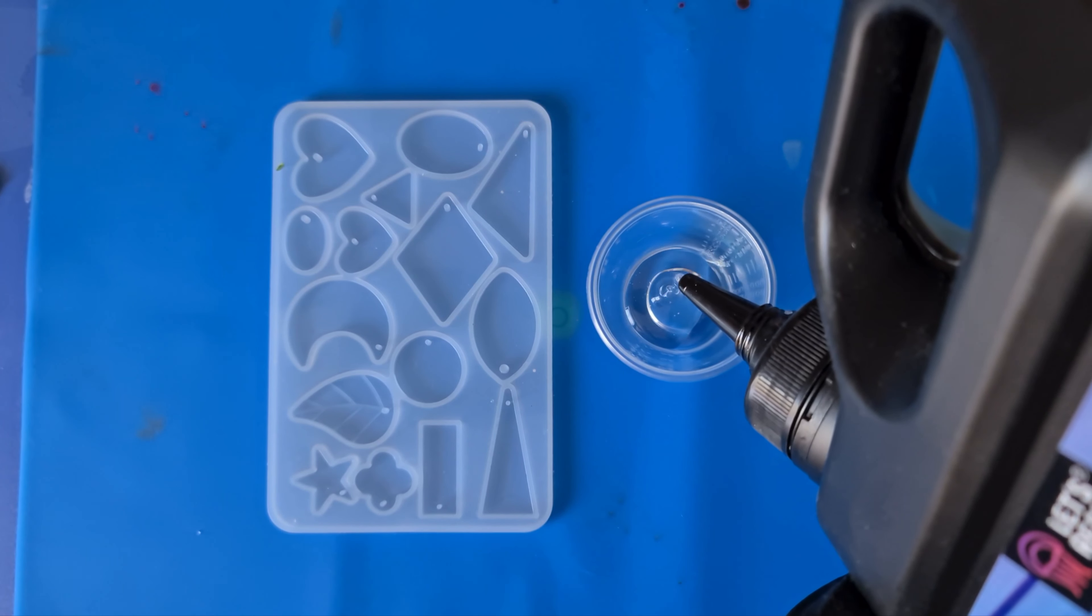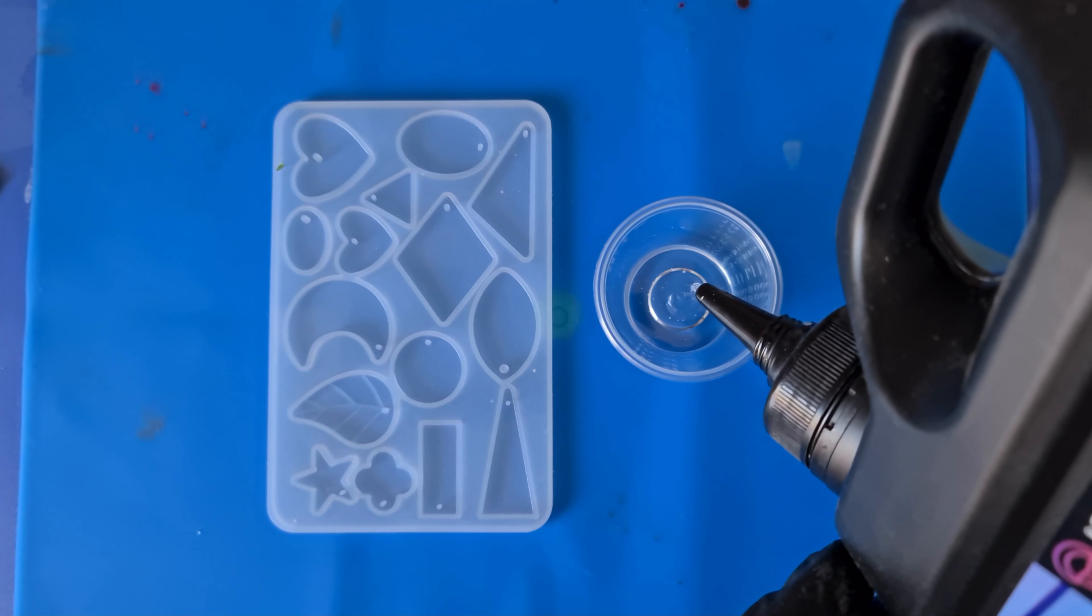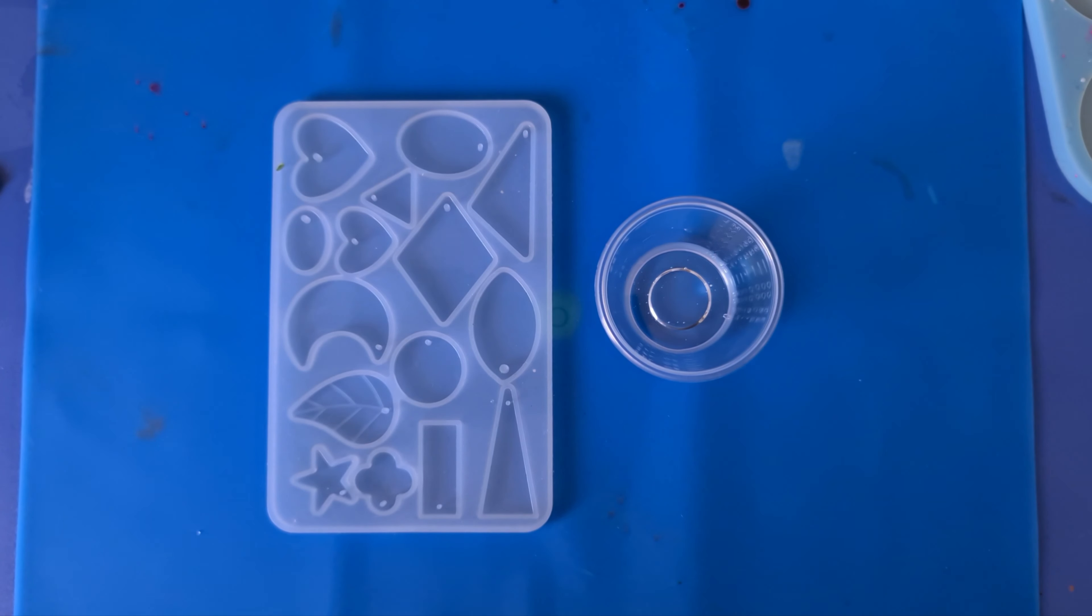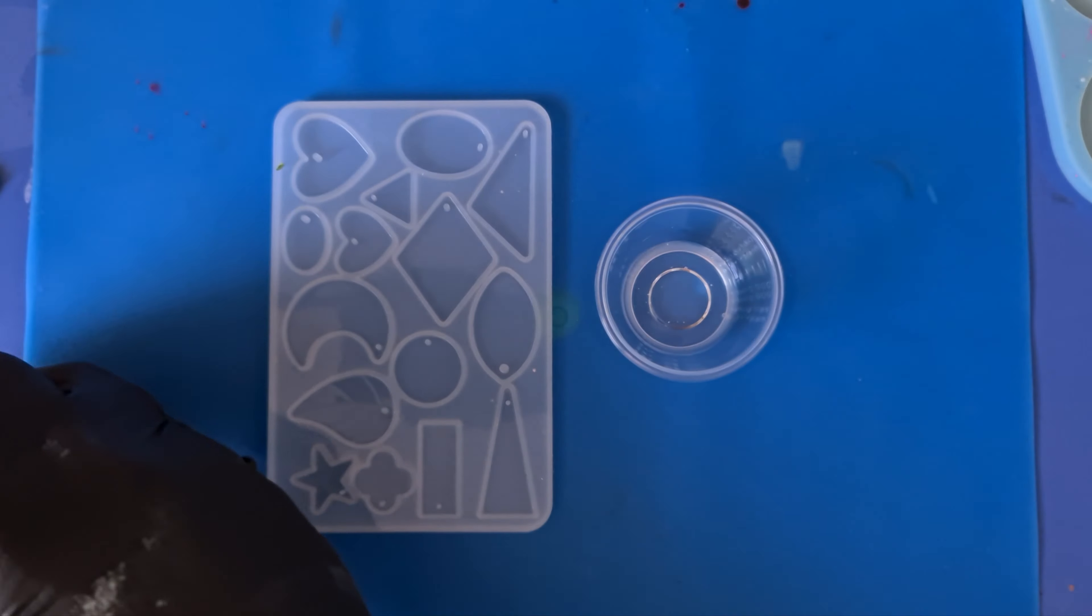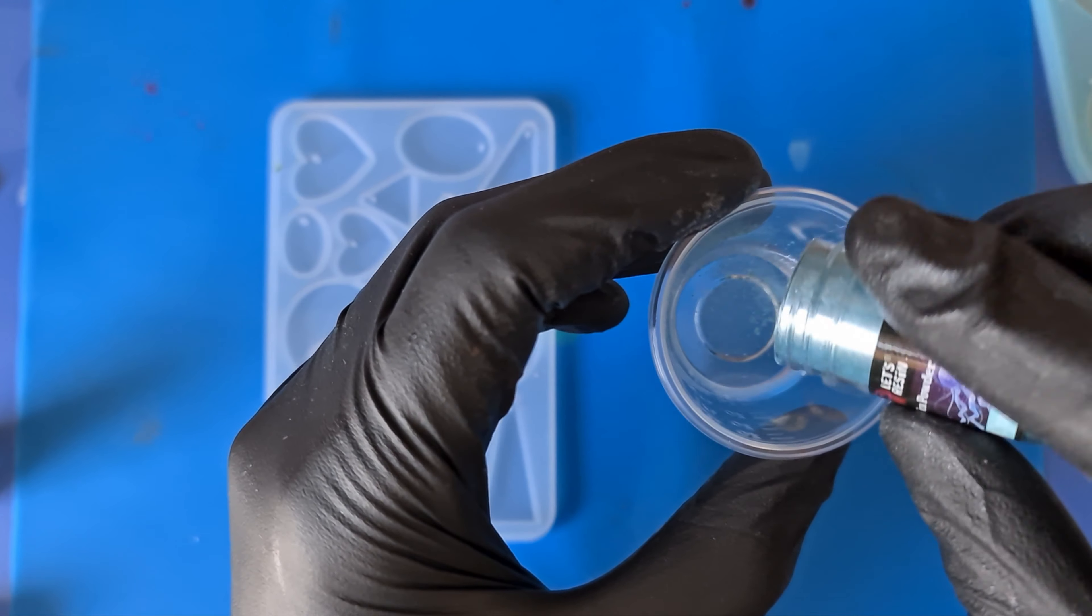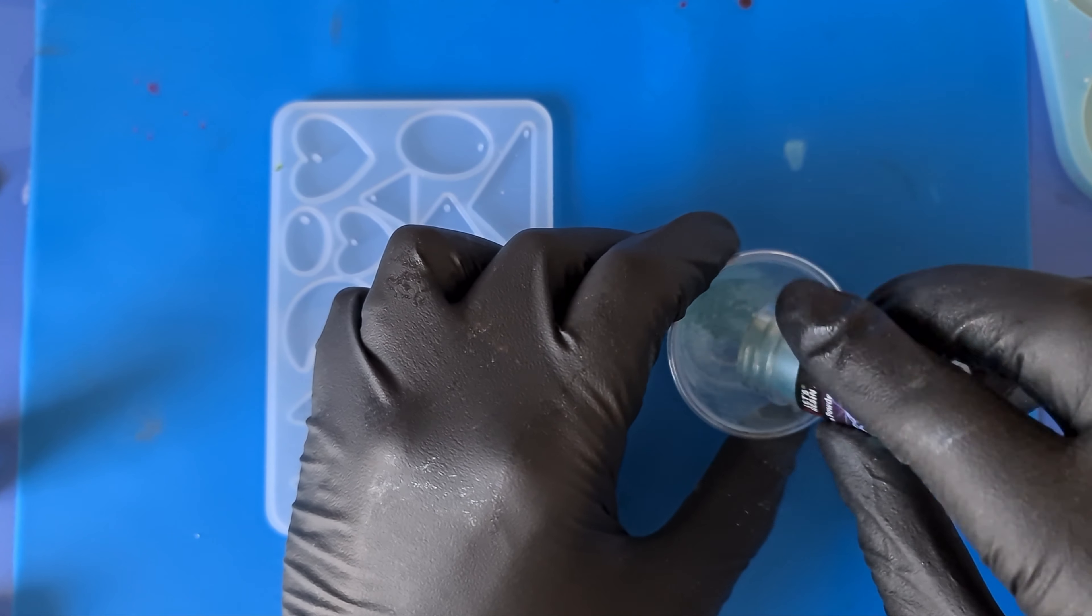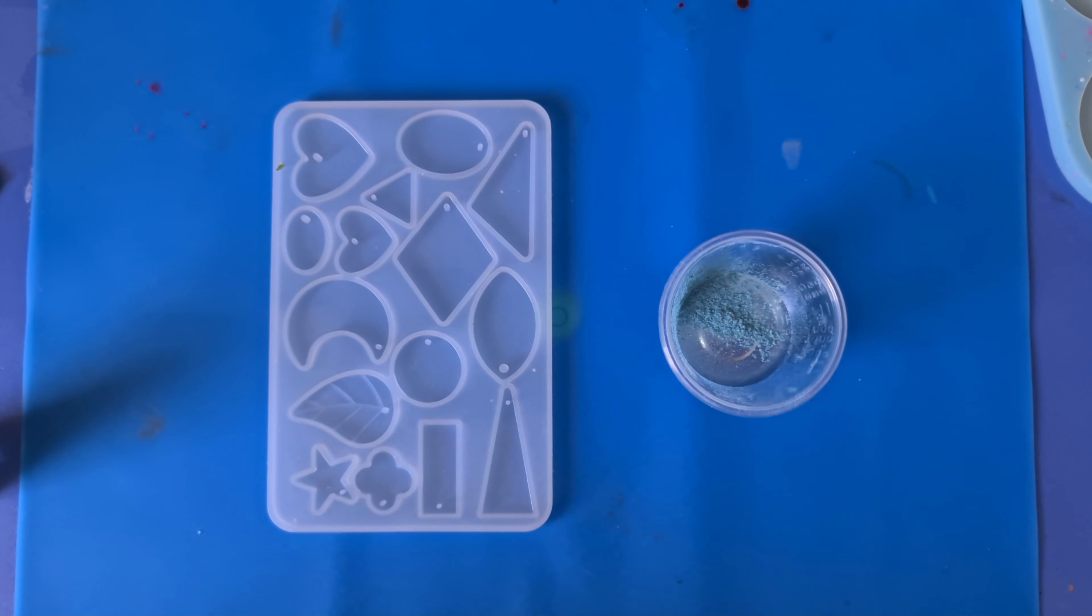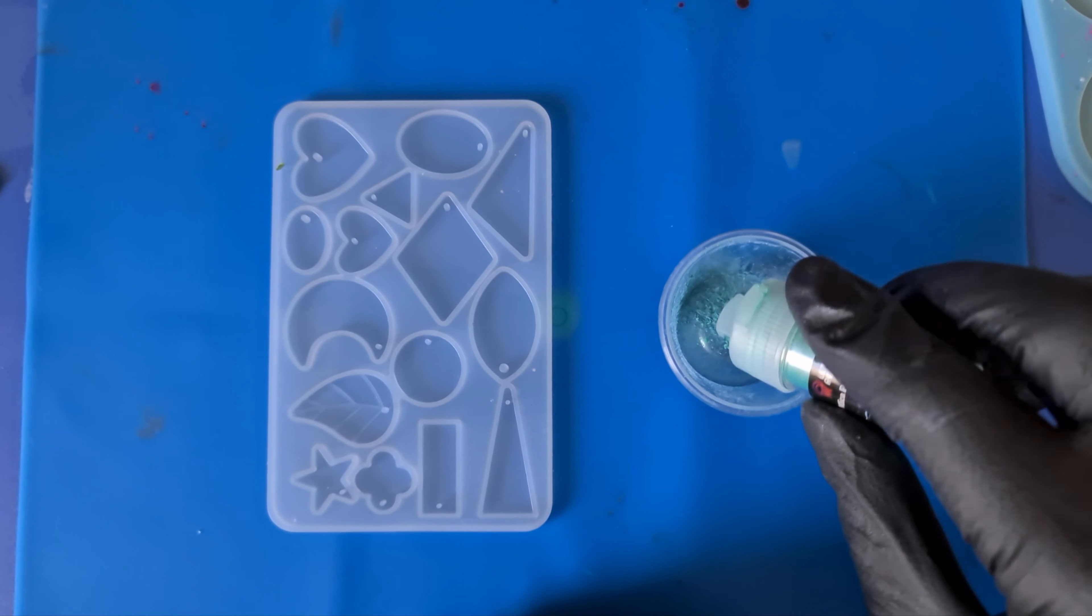I'm just going to begin by pouring some into my mixing cup. I'm going to use mica powders for this, but the trouble is they don't have a turquoise in the 36 mica set. So I'm going to try and make my own. To do that, I'm mixing a cyan with a spring green. It might not turn out spot-on, but I'm going to give it a good try. I'm going to begin by adding the cyan to the resin, and then I'm going to add some of the spring green.